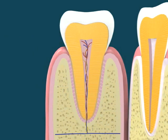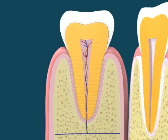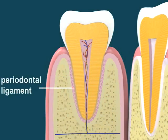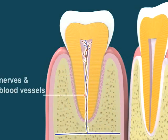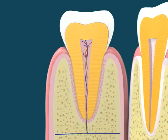The dental pulp is the part in the center of a tooth made up of living soft tissue and cells. The periodontal ligaments are connective tissue fibers that essentially attach a tooth to the alveolar bone. Nerve and blood vessels are the epicenter of the tooth, and the pulp is commonly called the nerve of the tooth.